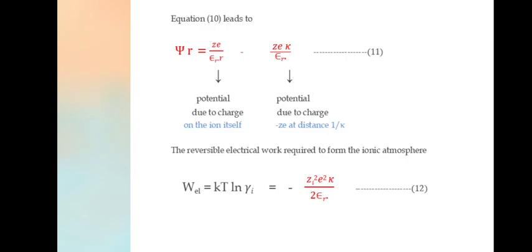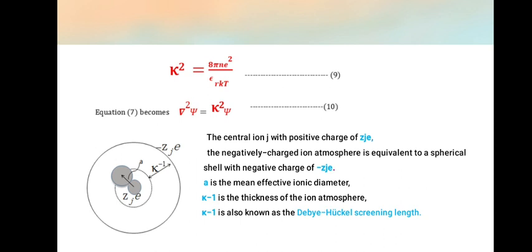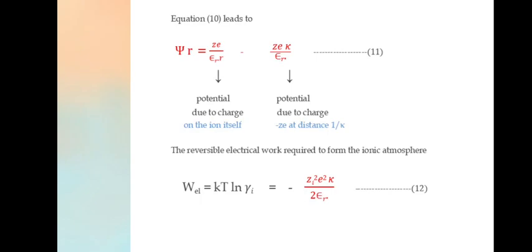Equation 10 leads to ψR = Ze/(εR) - Zeκ/(εR). The first term is the potential due to charge on the ion itself. Second one is due to -Ze at a distance 1/κ.